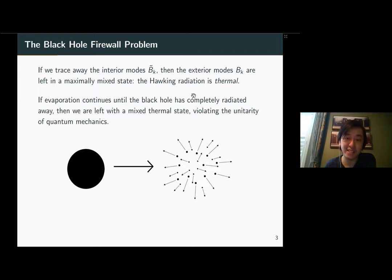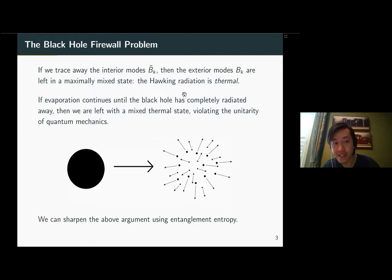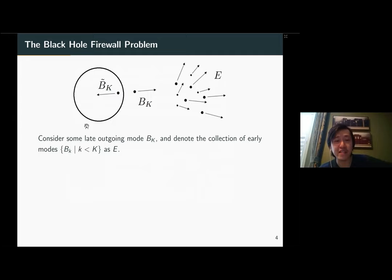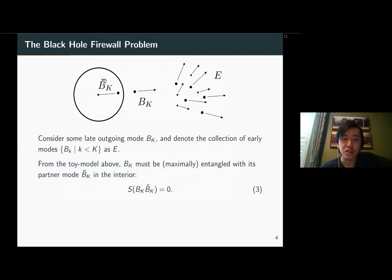This was the original problem Hawking discovered in the 1970s. It's problematic because there's tension between this process and the unitarity of quantum evolution — we started with a pure state but end with a mixed state. This is a statement about the S-matrix: we start with a pure state and end with a mixed state. You can sharpen this to finite times using entanglement entropies, and it becomes the so-called modern firewall problem. We consider some late mode labeled by some large integer k, sectoring off all early radiation as E.